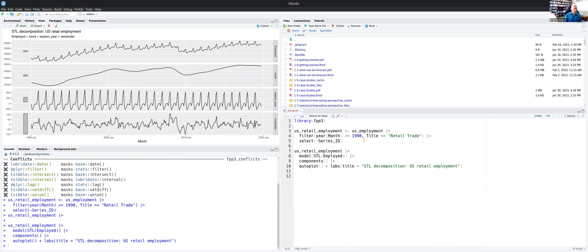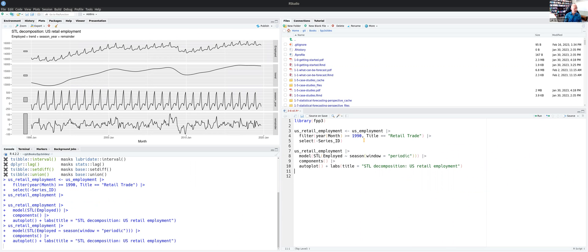Okay, so what else could we do? So we can control the seasonal pattern. So you can see there the seasonal pattern is changing over time. Suppose we don't want it to change over time. Suppose we want to make it so that it stays fixed over time.